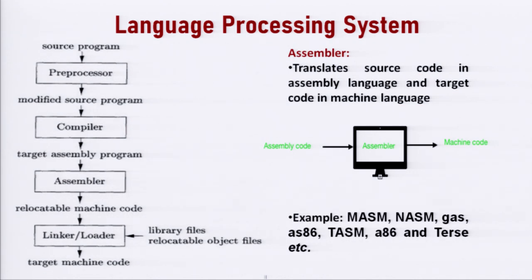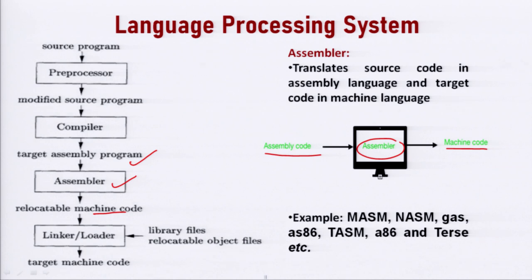The next component is the assembler, which is also a translator. The input to this translator is code written in assembly language, and the output is code in machine-level language — specifically relocatable machine code. Examples of assemblers include MASM, NASM, and TASM. The function of the assembler is to translate code written in assembly language into code written in machine-level language.